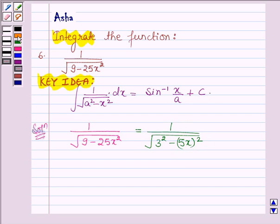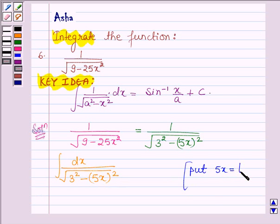We have to integrate this function. Therefore, we have integral dx upon root over 3 square minus 5x whole square. Let us put 5x is equal to t.